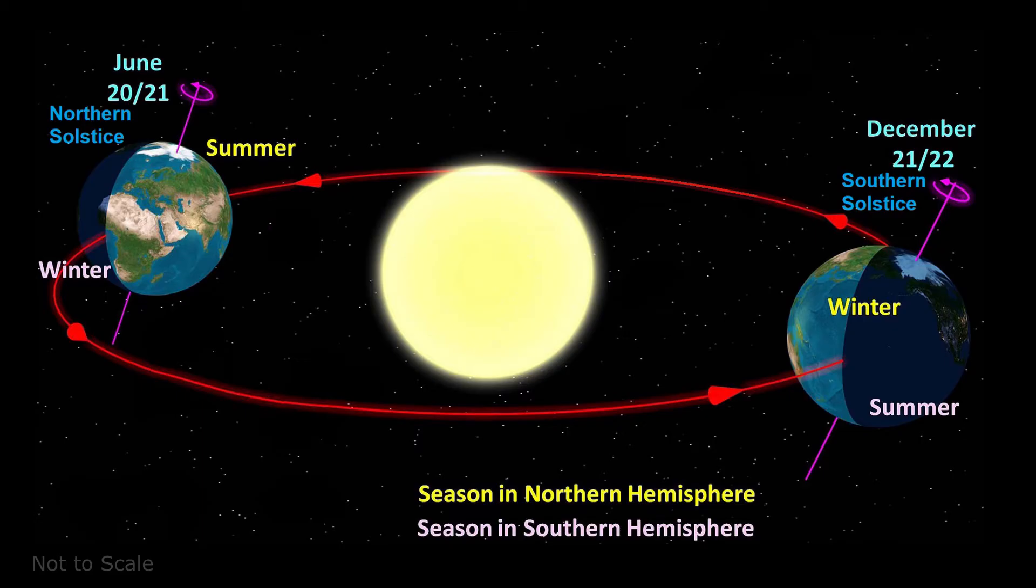The northern solstice occurs around June 21st, and the southern solstice around December 21st, although the exact date changes because of fractional calendar adjustments.